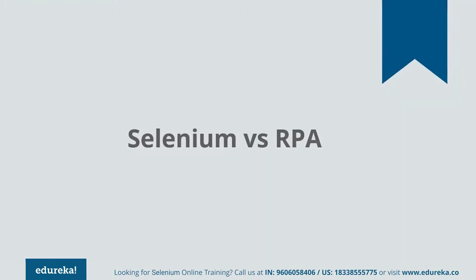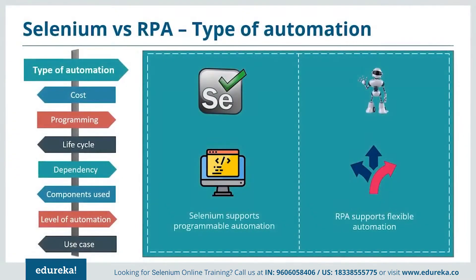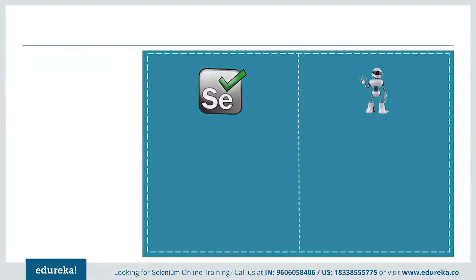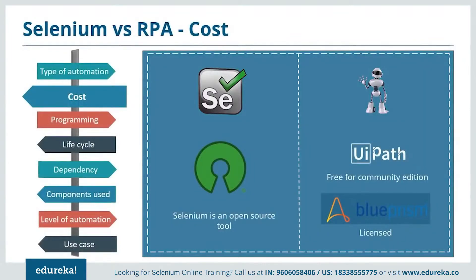Let's start by comparing the type of automation. Selenium supports programmable automation, whereas RPA supports flexible automation. Programmable automation can change the sequence of any operation based on user requirements, whereas flexible automation is a hybrid of fixed and programmable automation.